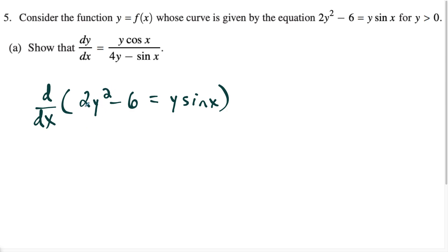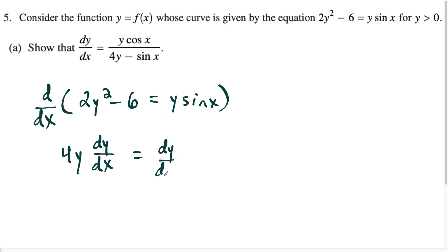So we're going to have two times two y giving us four y. But remember, anytime you take the derivative with respect to x of a y term, you have to tack on a dy/dx. The derivative of minus six is zero. And then on the right side, we have to use the product rule. So we're going to have the derivative of y is one times dy/dx times sine x, plus y times the derivative of sine x which is cosine x.